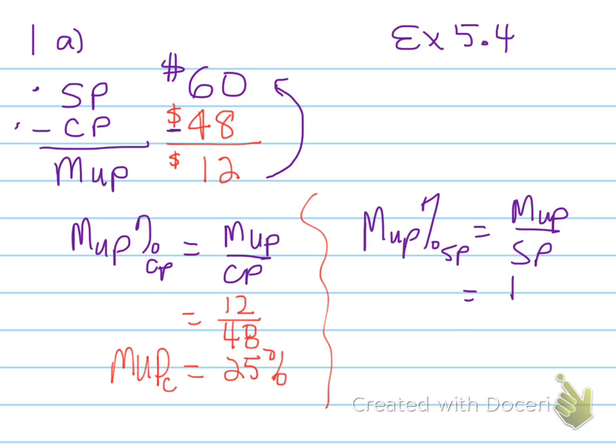The amount of markup is $12, the selling price is $60, and a ratio of $12 to $60 will be 1 out of 5, and 1 out of 5 is 20%. So a markup rate based on sales is 20%.